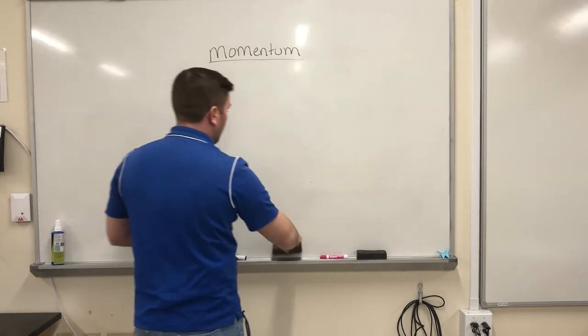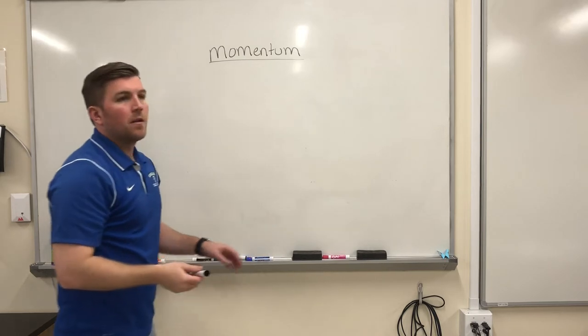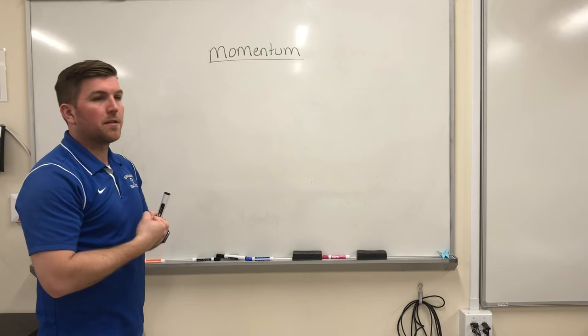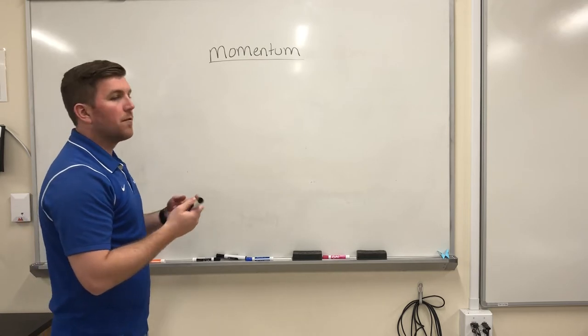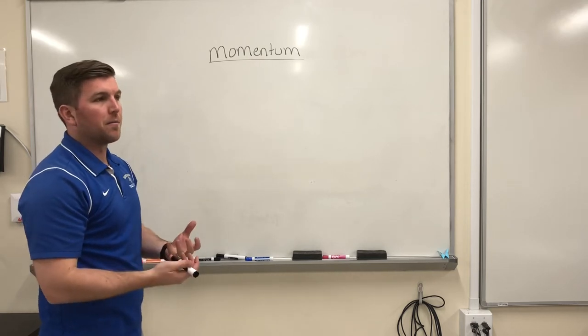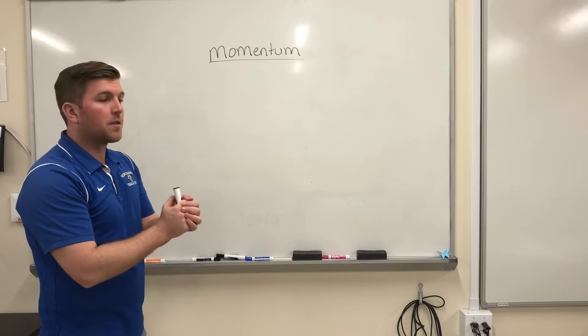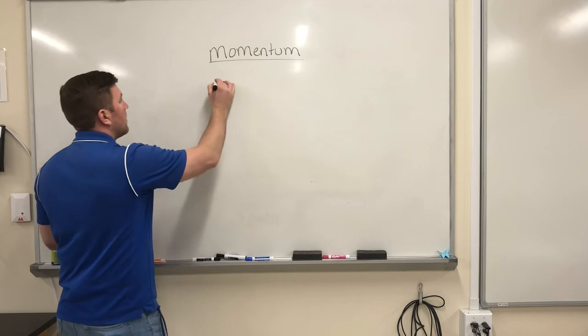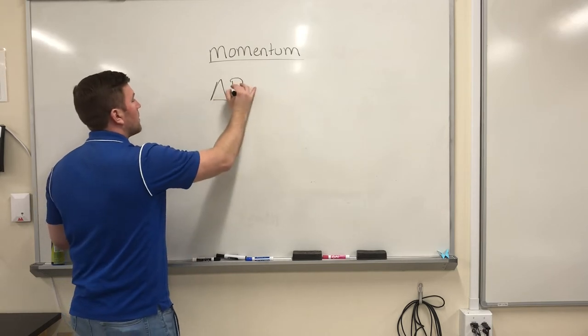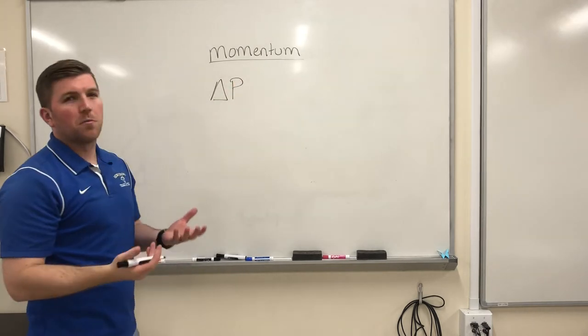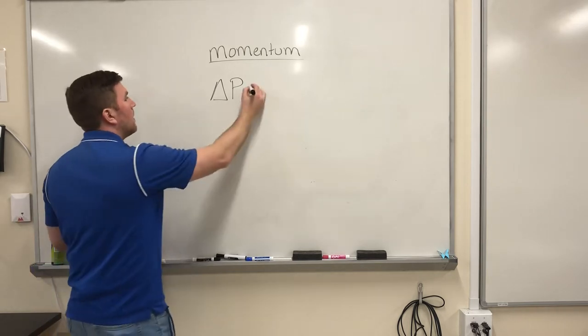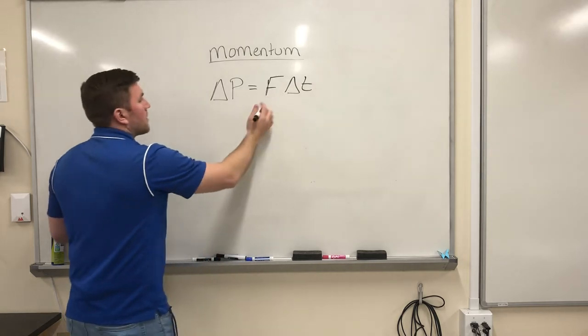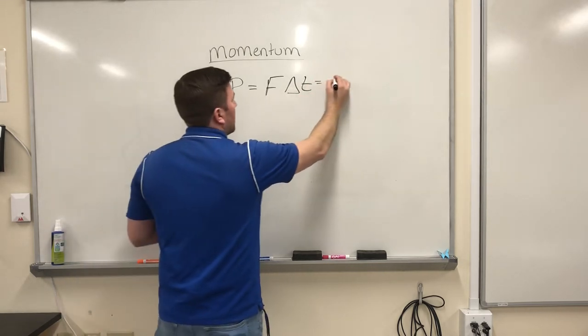We also can look at this a different way. When you have a change in momentum, if you have a car accident with two cars, the individual cars will feel a change in momentum. Together, there is no change, everything is conserved. But individually, you're going to feel a difference. So if I looked at just one of the cars, I said, what is their change in momentum? Well, their change in momentum is the same as this formula for something called impulse.